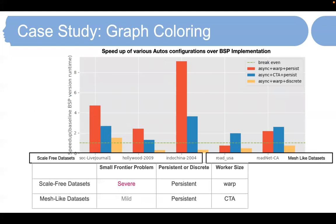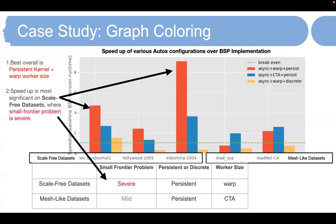Our second case study is graph coloring. We implement three ATOS variants: asynchronous warp worker with persistent kernel, asynchronous warp worker with discrete kernel, and asynchronous CTA worker with persistent kernel. The graph coloring algorithm is not available in GUNROCK, so instead we manually implemented the BSP version of the graph coloring algorithm as the baseline. The top figure shows the speedup of different ATOS variants compared to the BSP baseline. The best performing implementation is ATOS asynchronous warp worker with persistent kernel. The speedup is most significant on scale-free datasets, where the small frontier problem is severe.